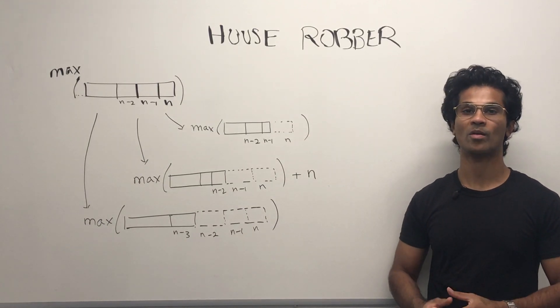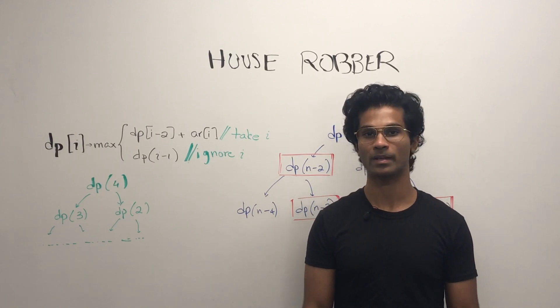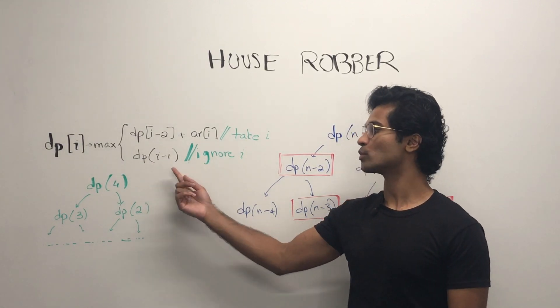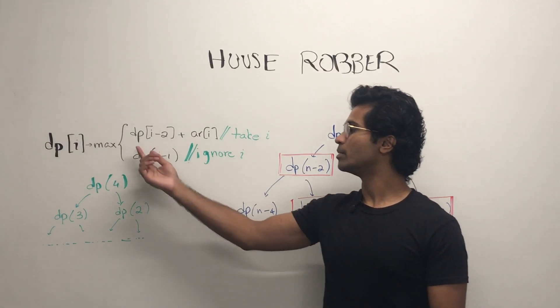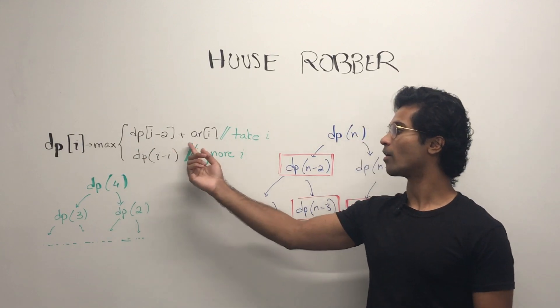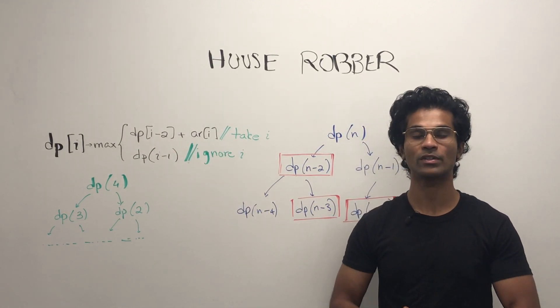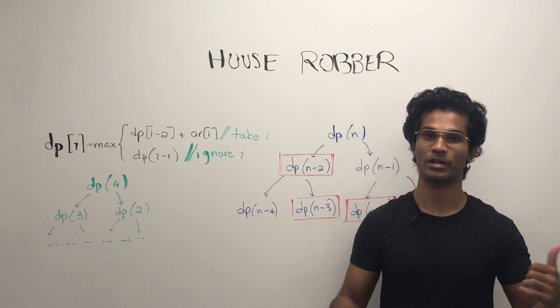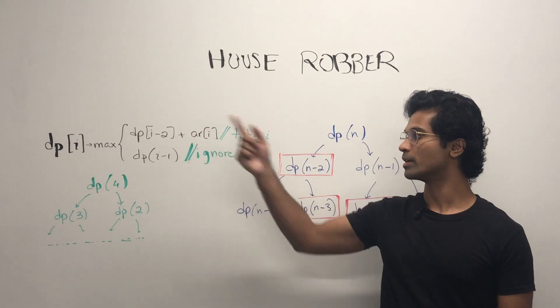Now let's look at how we come up with the DAG. Now that we've decided on our subproblems, let's see what they mean. dp of i minus 1 means we're going to ignore the element at i. dp of i minus 2 plus ar of i means we're going to take i and we're going to recursively ask for the subproblem i minus 2.